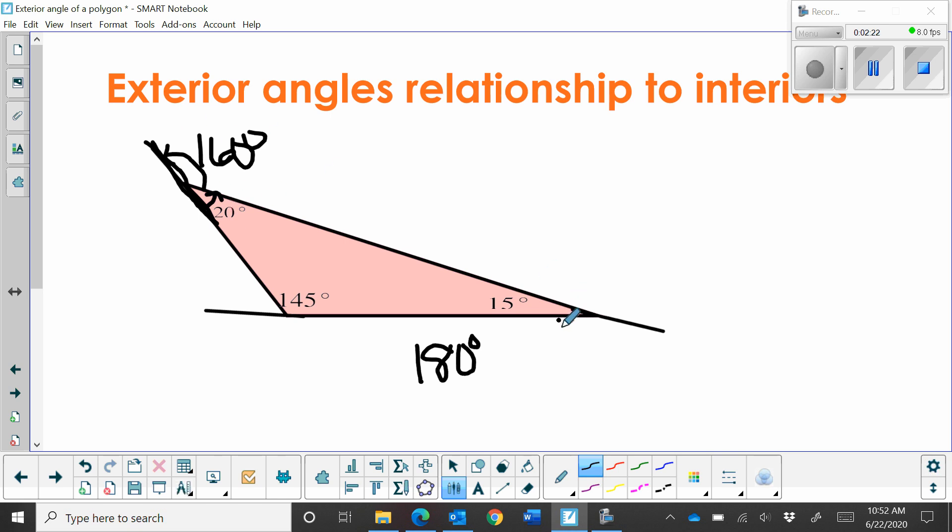So this exterior angle, I look at the interior, I see the straight line, and I say, okay, if this is 15, that is 165, because those two have to add to 180. And this obtuse angle of 145, I would subtract 145 from 180, and that gives me 35.